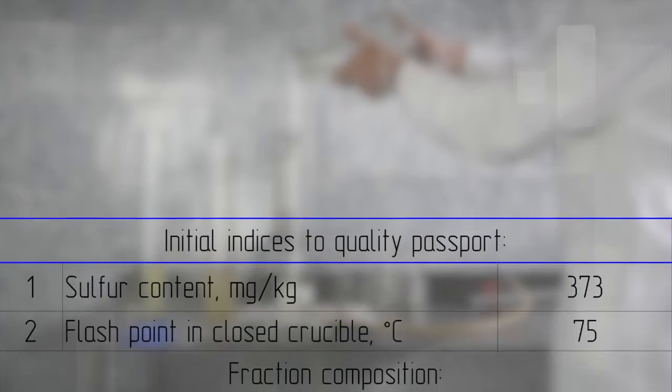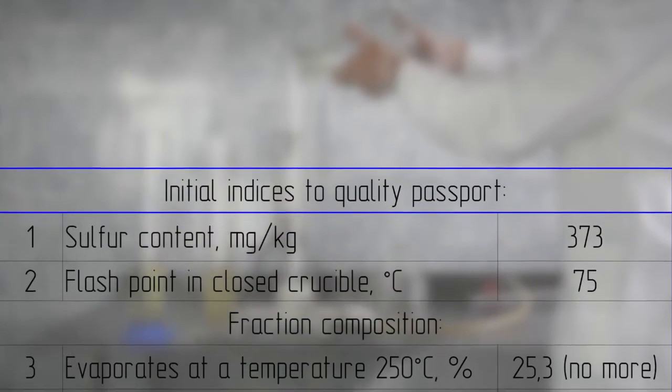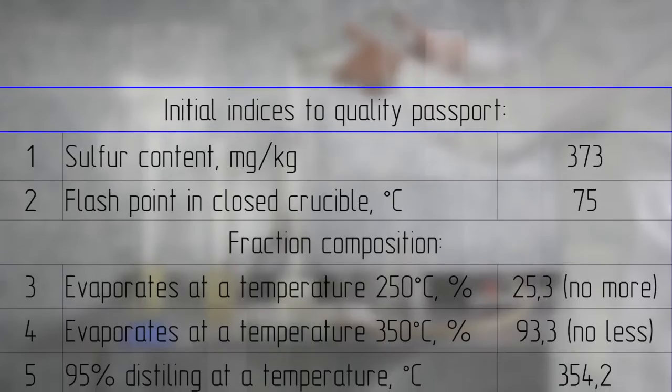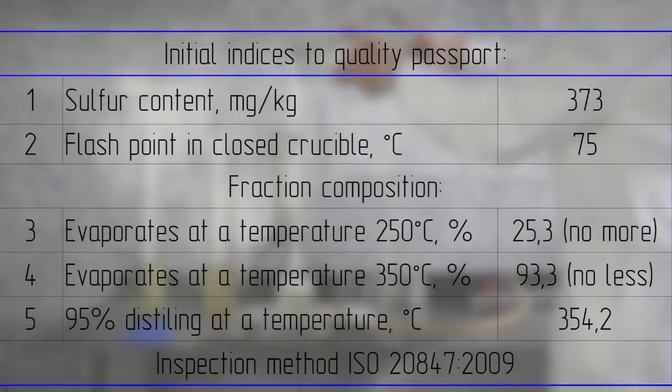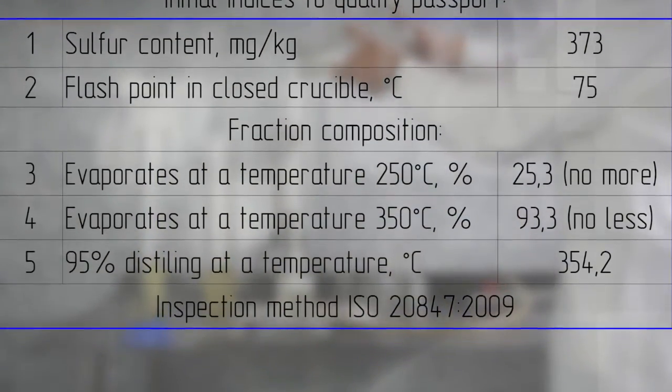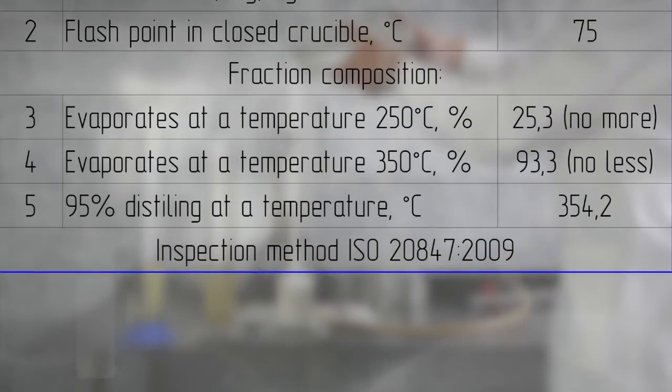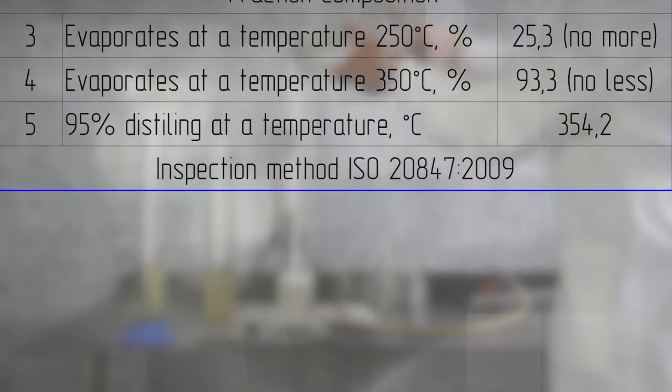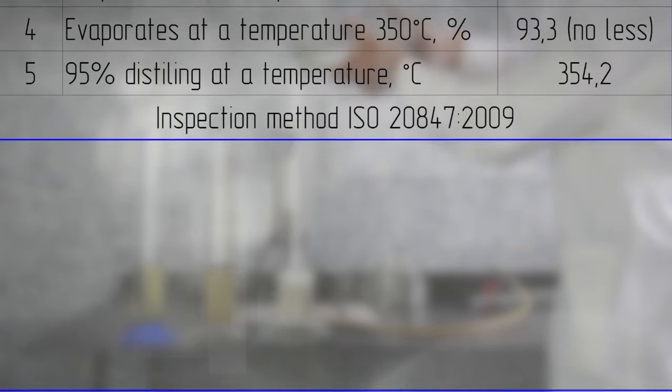Fuel properties: no more than 25.3% in volume evaporates at 250 degrees. Not more than 93.3% in volume evaporates at 350 degrees. 95% in volume distills at 350 degrees.